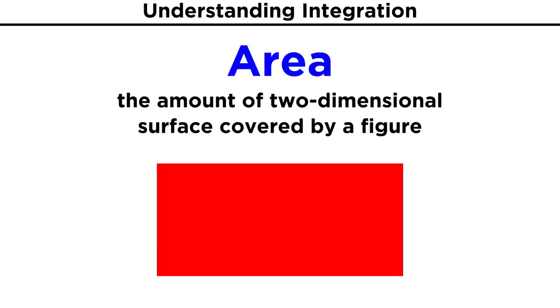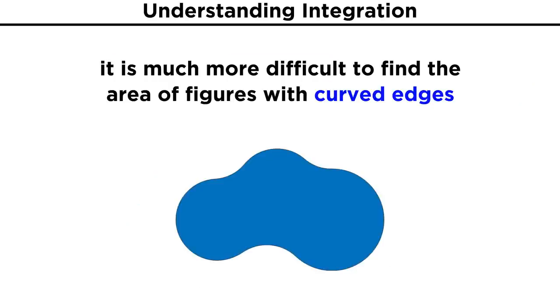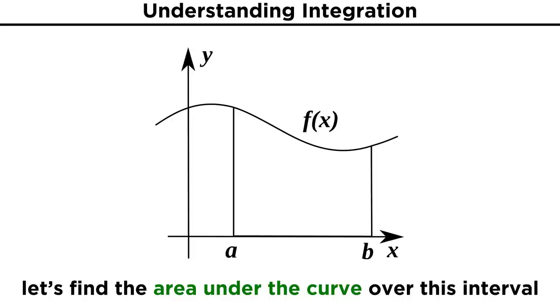In geometry, we learned about the concept of area, which is the amount of two-dimensional surface covered by a figure. We also learned how to calculate the area of all kinds of different polygons using specific formulas. But the ancient mathematicians realized that things get much trickier when curvature is involved. Say we have this curve here, given by the function f of x, and we want to know the area under this curve over this interval here from a to b. That means we are looking at this region,